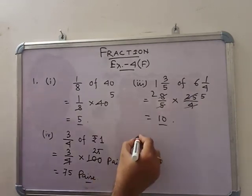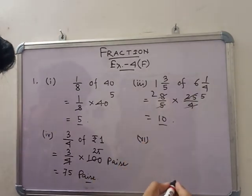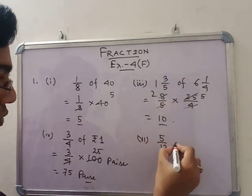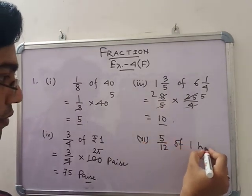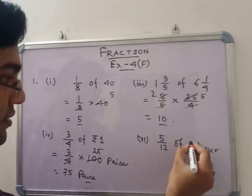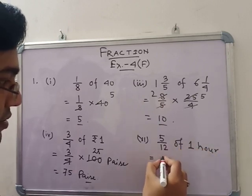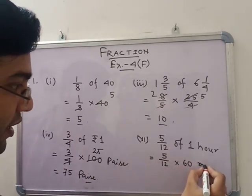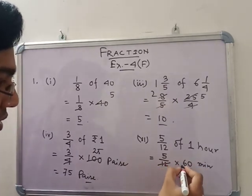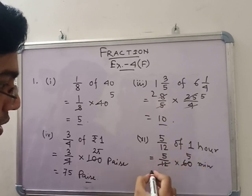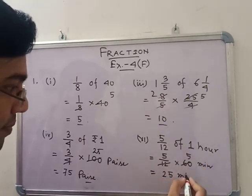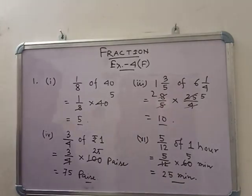Number 6: 5 by 12 of 1 hour. 1 hour means 60 minutes. So 5 by 12 into 60 minutes, that is 25 minutes.